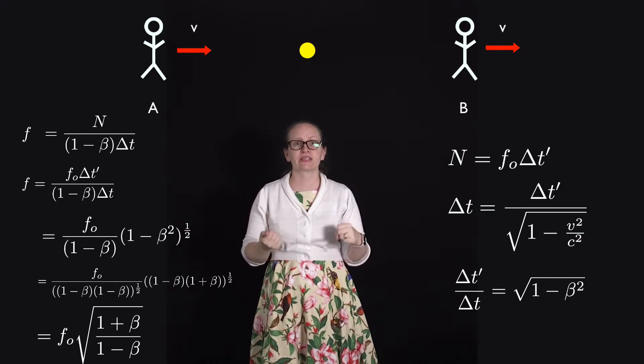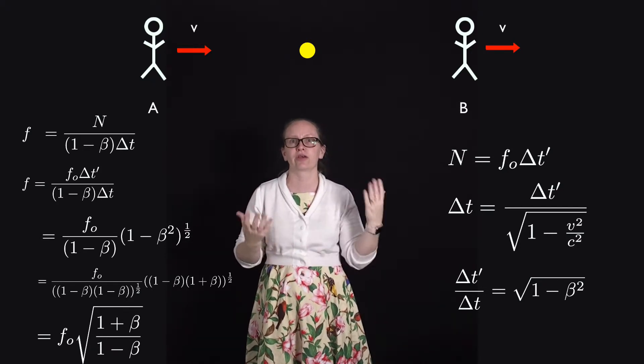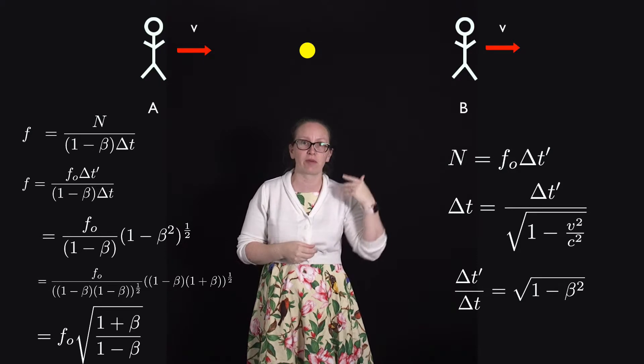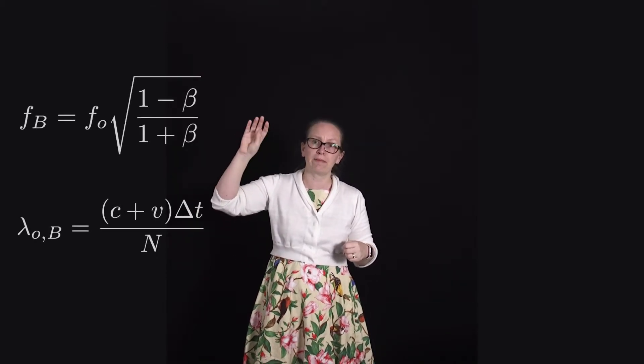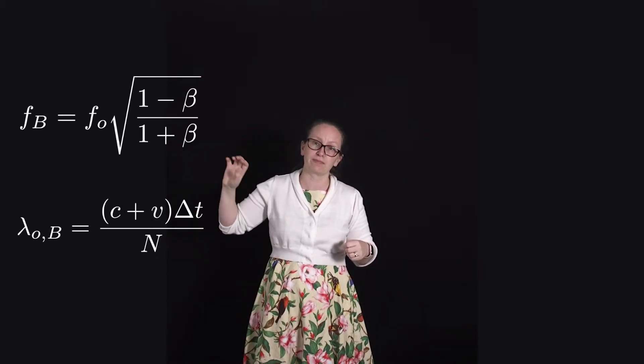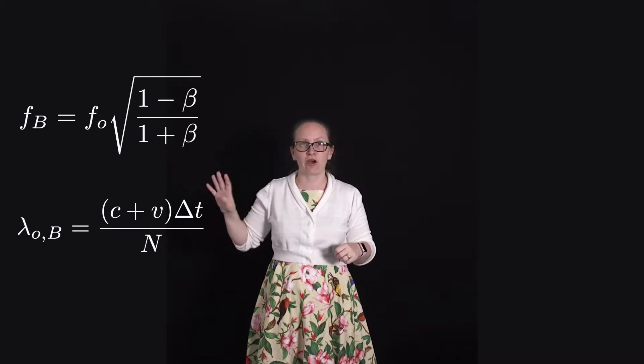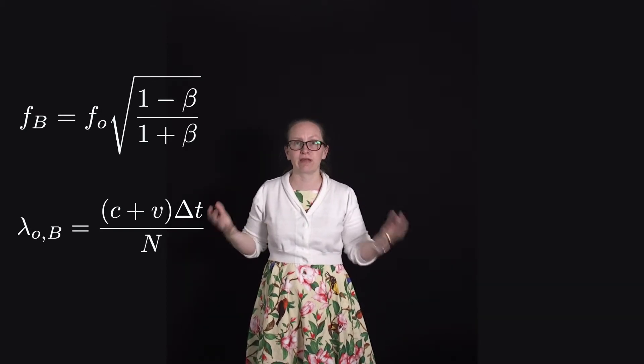We can also consider what happens to the light observed by Observer B, from whom the light source is receding. Working through similar steps for Observer B gives the frequency observed as the square root of (1 minus beta) over (1 plus beta), times F0. This is known as a red shift.